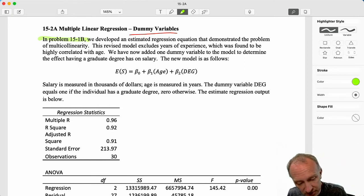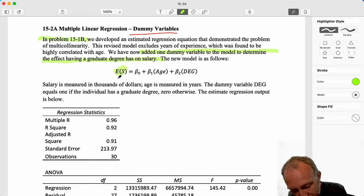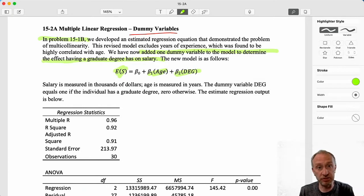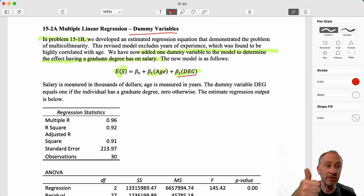Now we're going to incorporate a dummy variable to determine whether or not having a graduate degree impacts salary. Here we have our revised model where we have this person's expected salary as a function of age and whether or not they have a graduate degree. This variable is the categorical variable. One of the defining and really important characteristics about a dummy variable is that it can only ever take a value of zero or one, no exceptions.